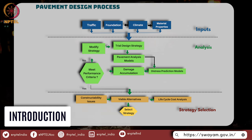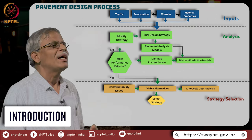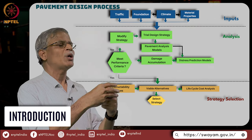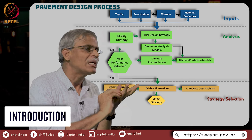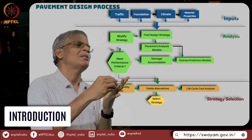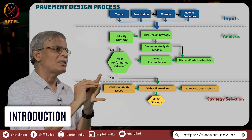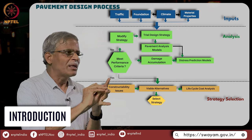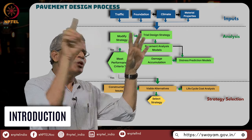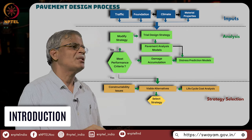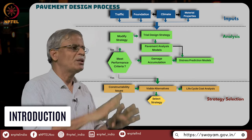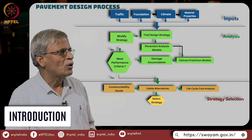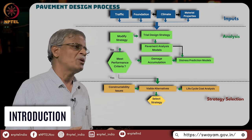And once this is done, we move on to the next stage. This is the stage in which you look at various aspects such as constructability, life cycle cost, and reliability. So this more or less is the comprehensive design framework that we are going to follow for bituminous pavement.